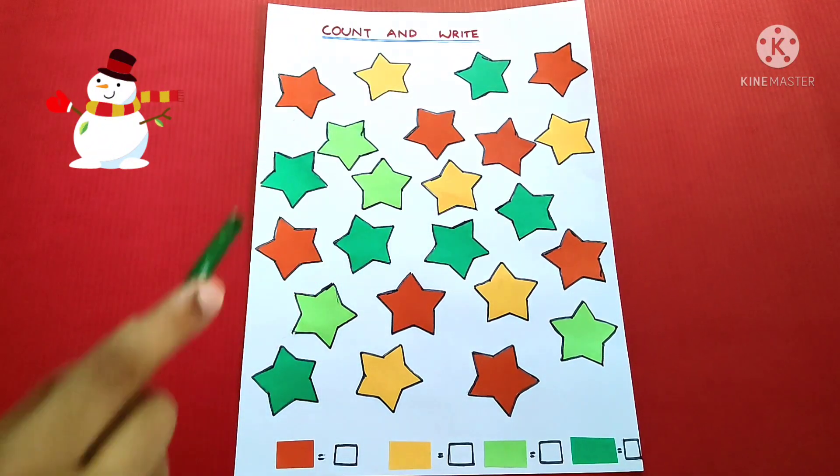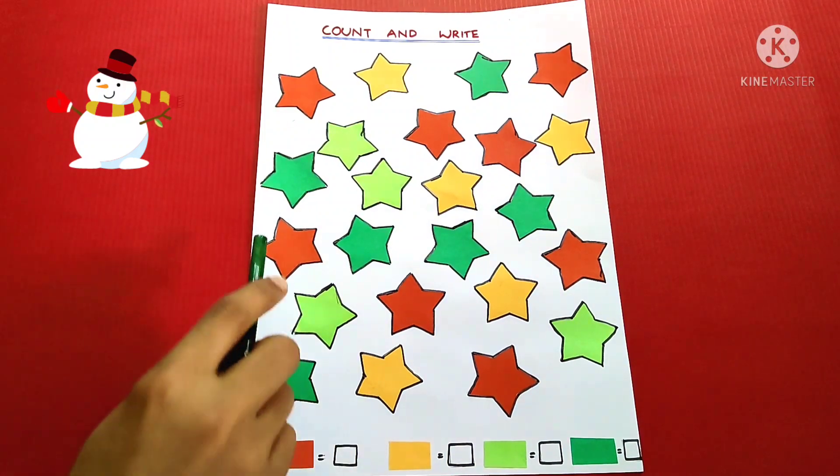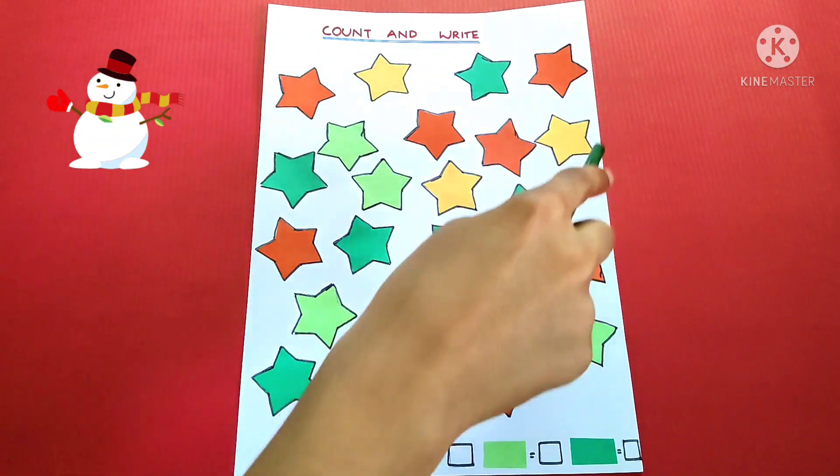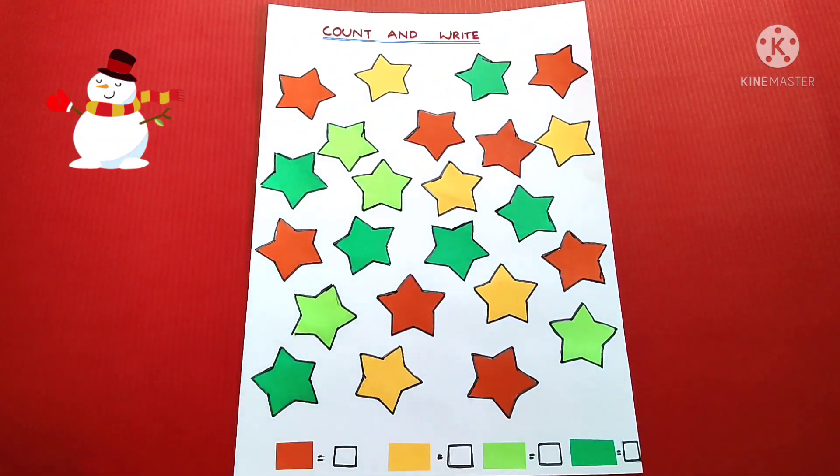Count and write. Orange. 1, 2, 3, 4, 5, 6, 7, 8.